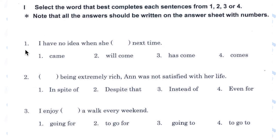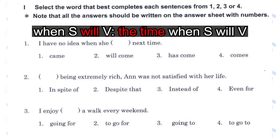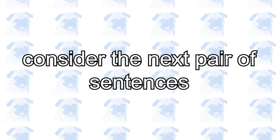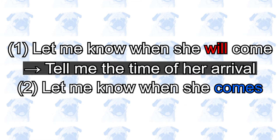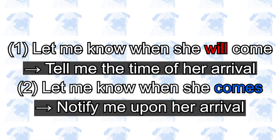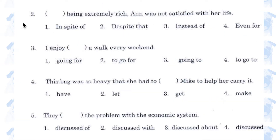Section 1, Number 1. 'I have no idea when she came / will come / has come / comes next time.' Number 2, will come. Inside a when clause, if you use 'will', then that clause expresses a future time. 'Let me know when she will come' versus 'let me know when she comes.' The former means I want to know the time of her arrival, whereas the latter means I want you to notify me as soon as she arrives.